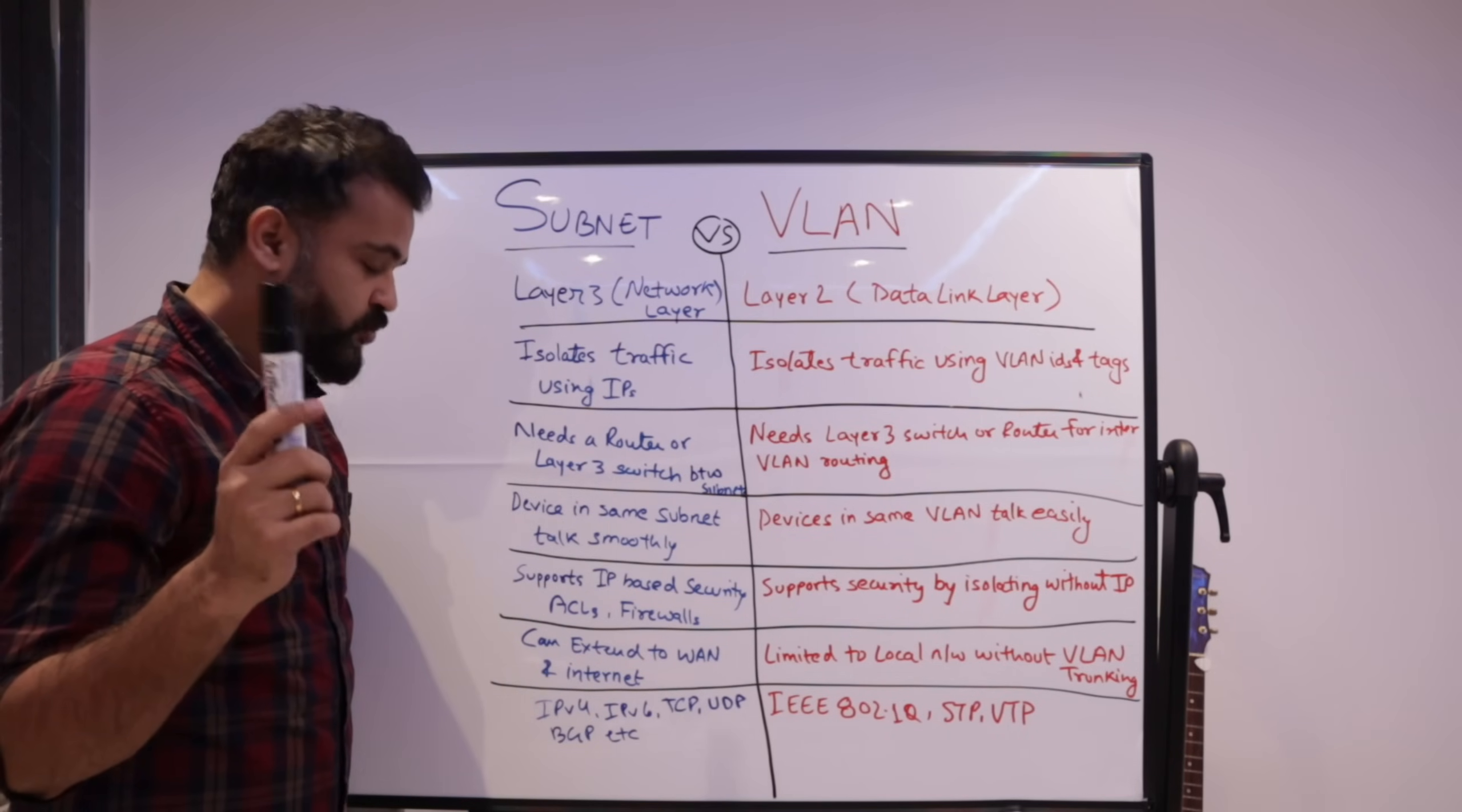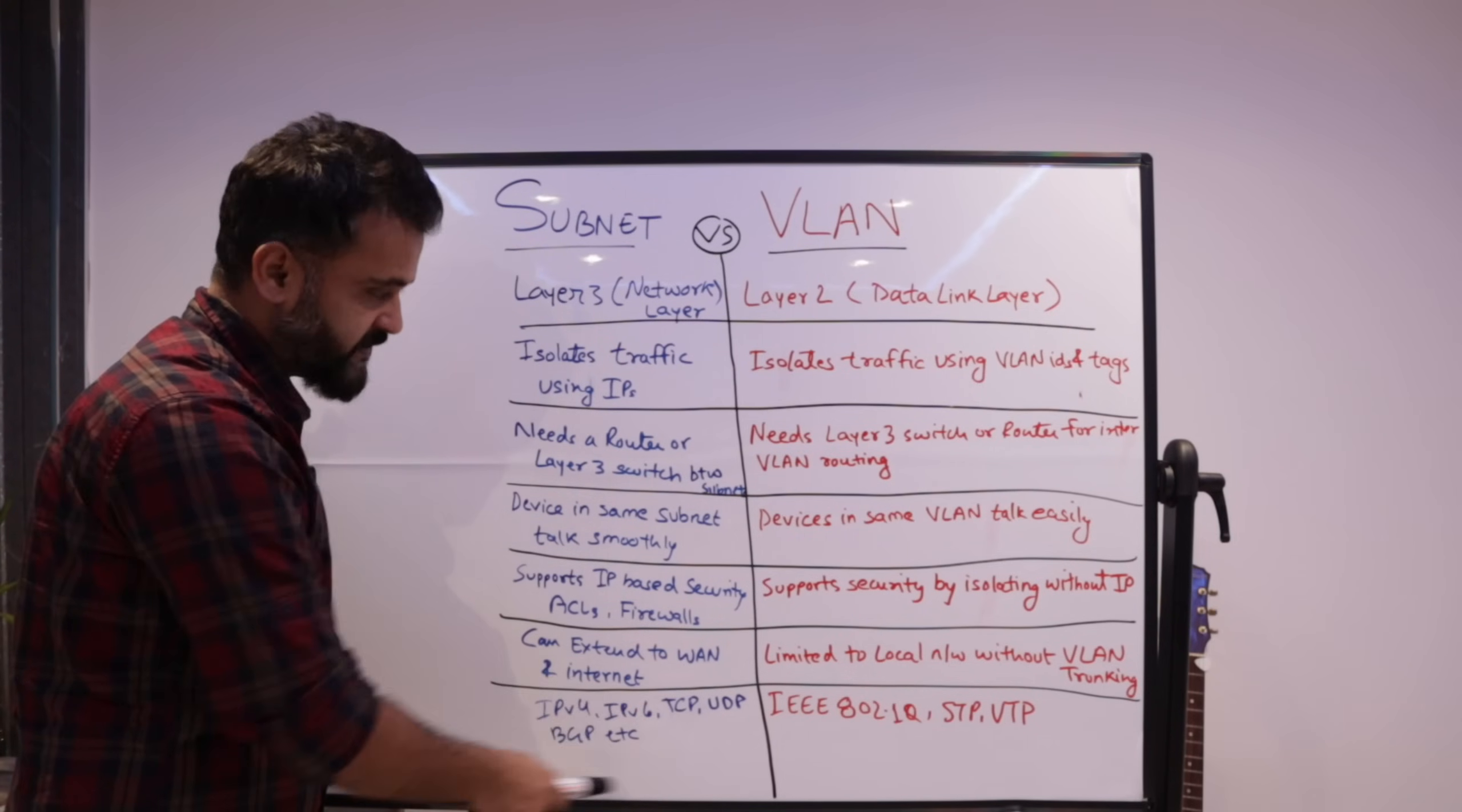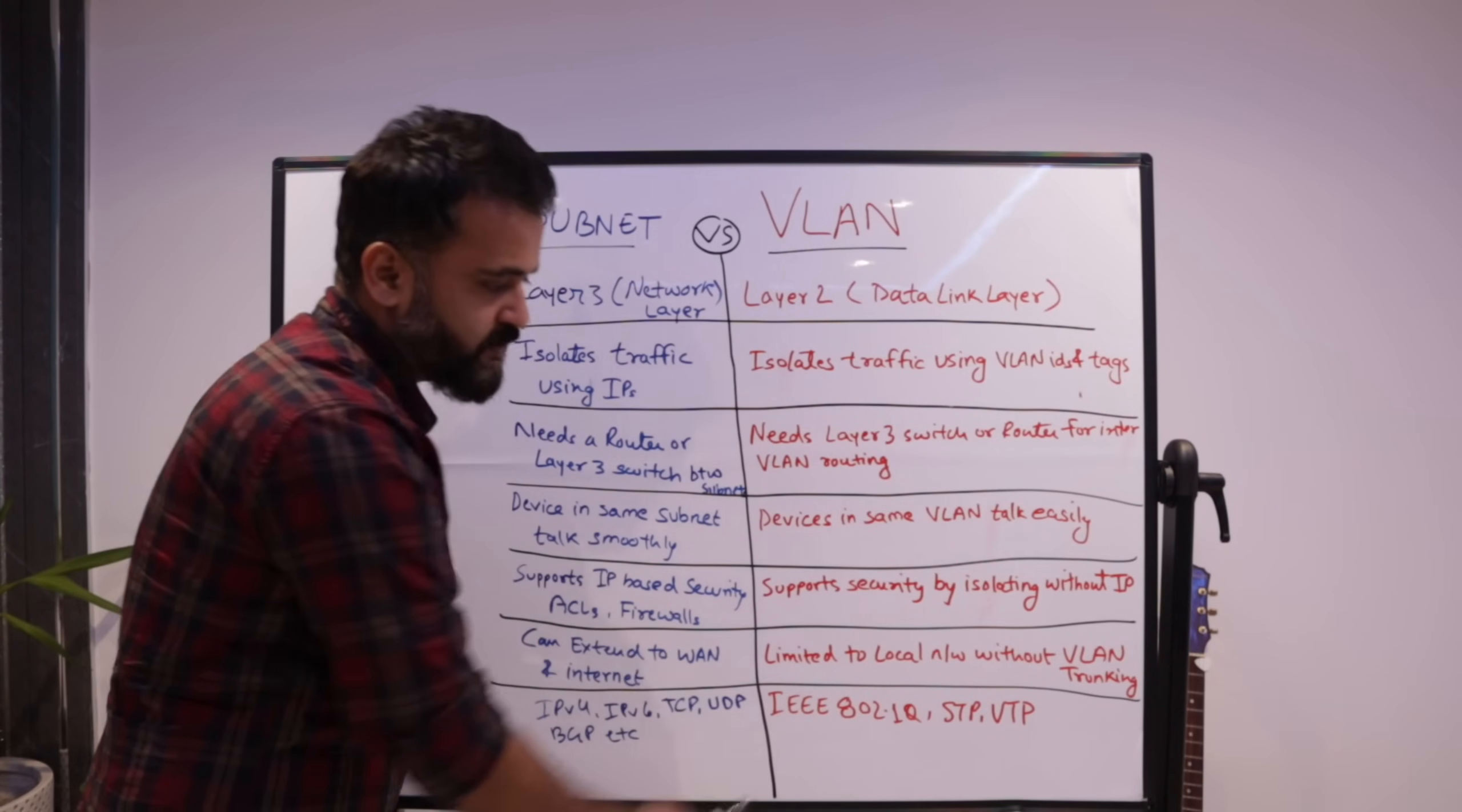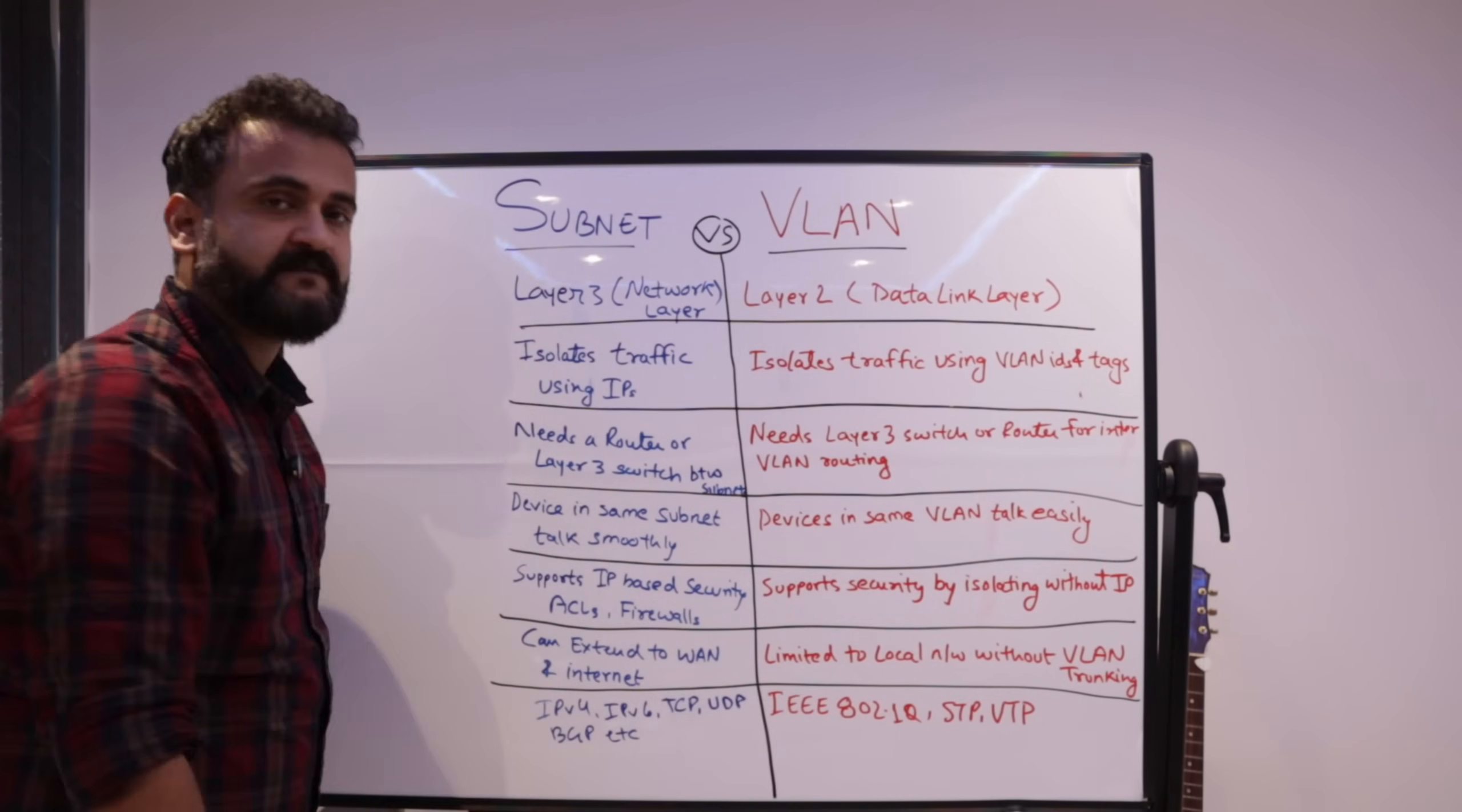Some primary protocols used are IPv4, IPv6, TCP, UDP, BGP, RIP, OSPF, all these kinds of routing protocols. Everything is common in this subnetting. Whereas here, because it is primarily at layer two, the Ethernet protocol, which is the industry standard for VLAN, IEEE 802.1Q. And then you have spanning tree protocol and VLAN trunking protocol. So these are some protocols which come into play when we use VLAN.